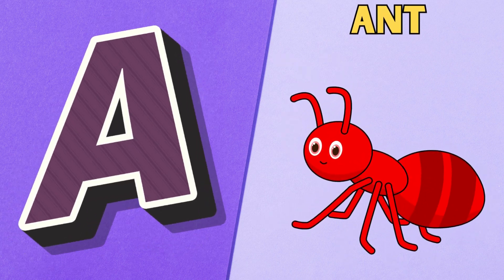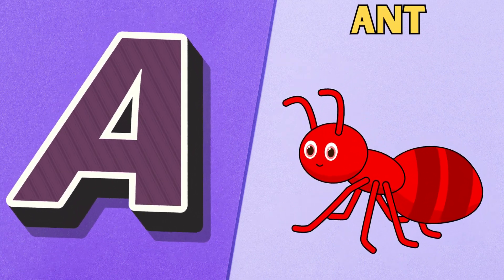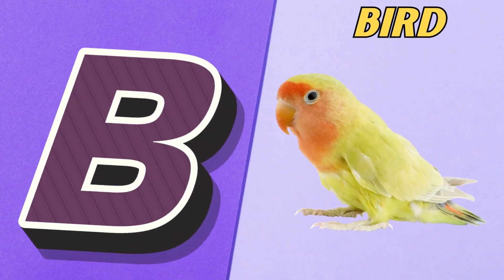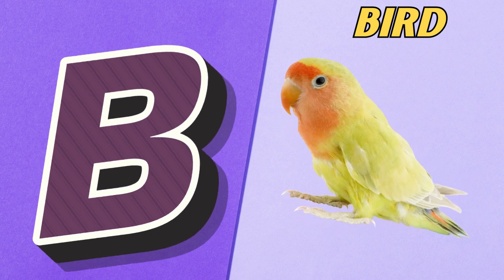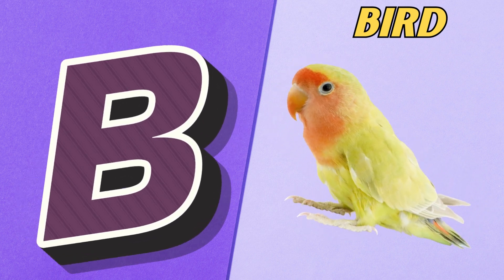A is for ant, ah, ant. B is for bird, b, bird.